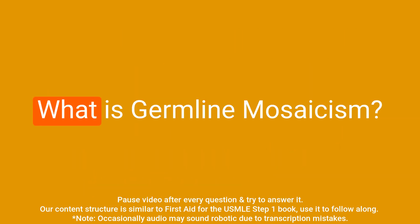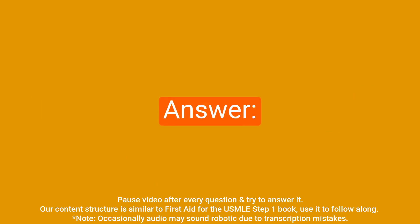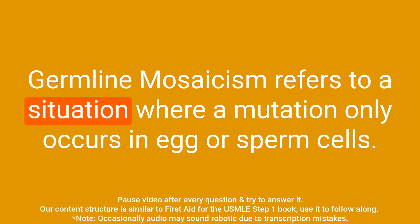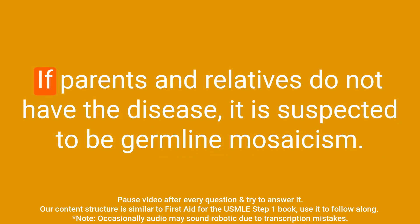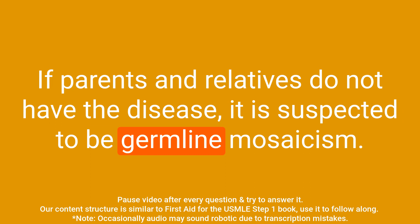Question: What is germline mosaicism? Answer: Germline mosaicism refers to a situation where a mutation only occurs in egg or sperm cells. If parents and relatives do not have the disease, it is suspected to be germline mosaicism.